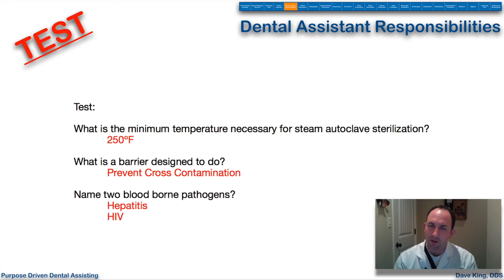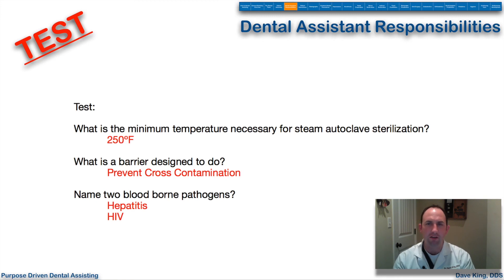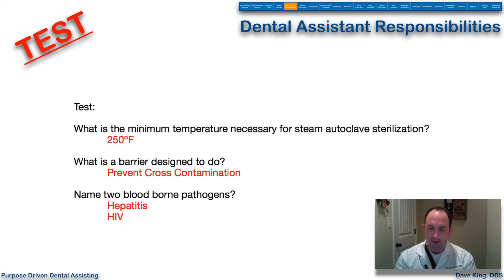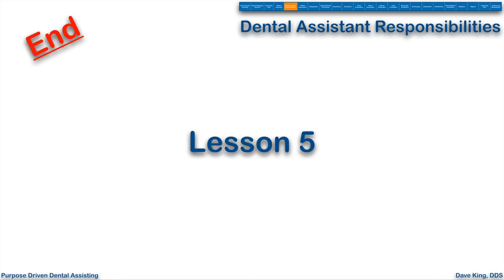A barrier is designed to prevent cross-contamination. It's one extra step — we wipe down the surface after use and then put a barrier on it as a fail-safe, in case we missed some minute nook or cranny. Two blood-borne pathogens: hepatitis and HIV — those are probably the two big ones we worry about. That is the end of Lesson 5. Thanks for watching — we will see you in the next lesson.